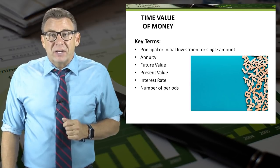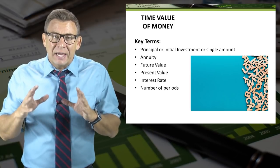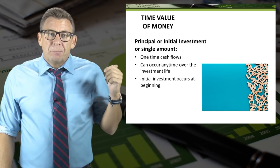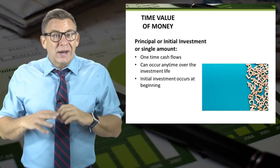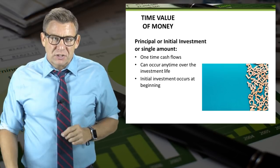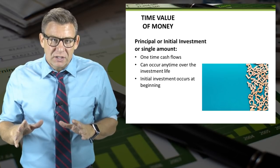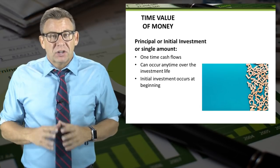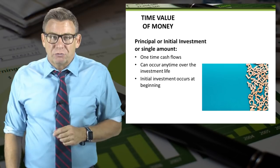Let's wrap up this video by learning some terms that will be used when we apply time value of money to capital budgeting. The principal amount, the initial investment, or a single amount are one-time cash flows. They can occur anytime over the life of the project and can be an inflow or an outflow. However, the initial investment occurs at the beginning and it is a cash outflow.